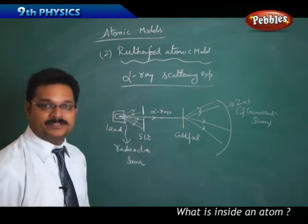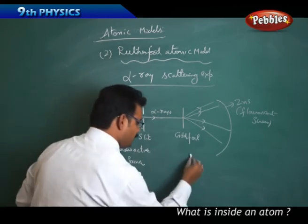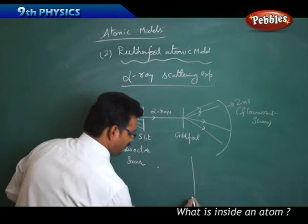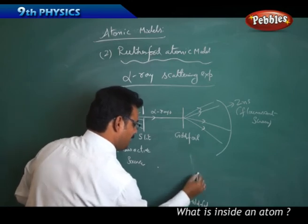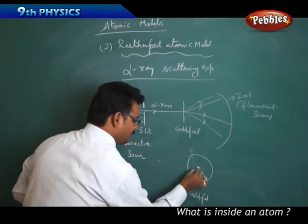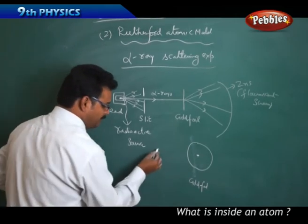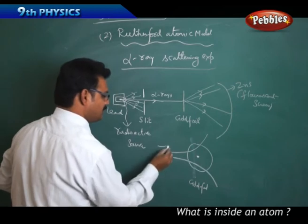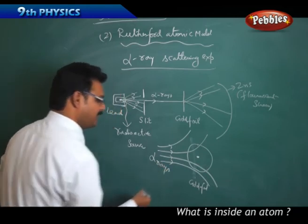So this experiment happened like this. Now what happened? If this is the gold foil, the alpha particles are coming through the gold foil. In the gold foil I'll keep the nucleus, the atom like this, and this is the nucleus. Many alpha particles are coming through it. Some alpha particles are deviated like this, some are deviated like this. All these are alpha particles, alpha rays.